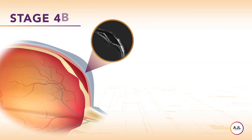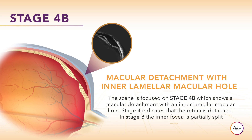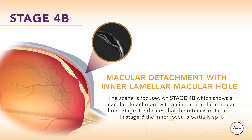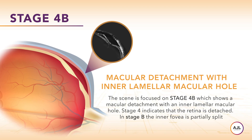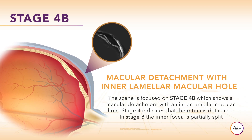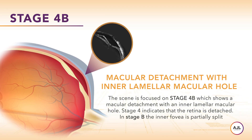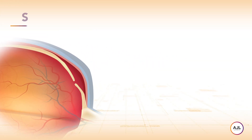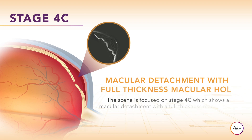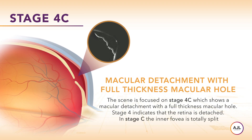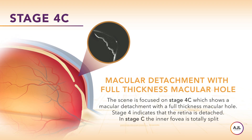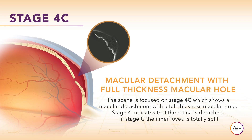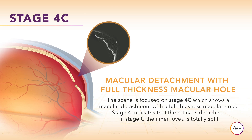Stage 4b shows macular detachment with an inner lamellar macular hole. Stage 4 indicates that the retina is detached. In stage B, the inner fovea is partially split. Stage 4c shows macular detachment with a full thickness macular hole. Stage 4 indicates that the retina is detached. In stage C, the inner fovea is totally split.